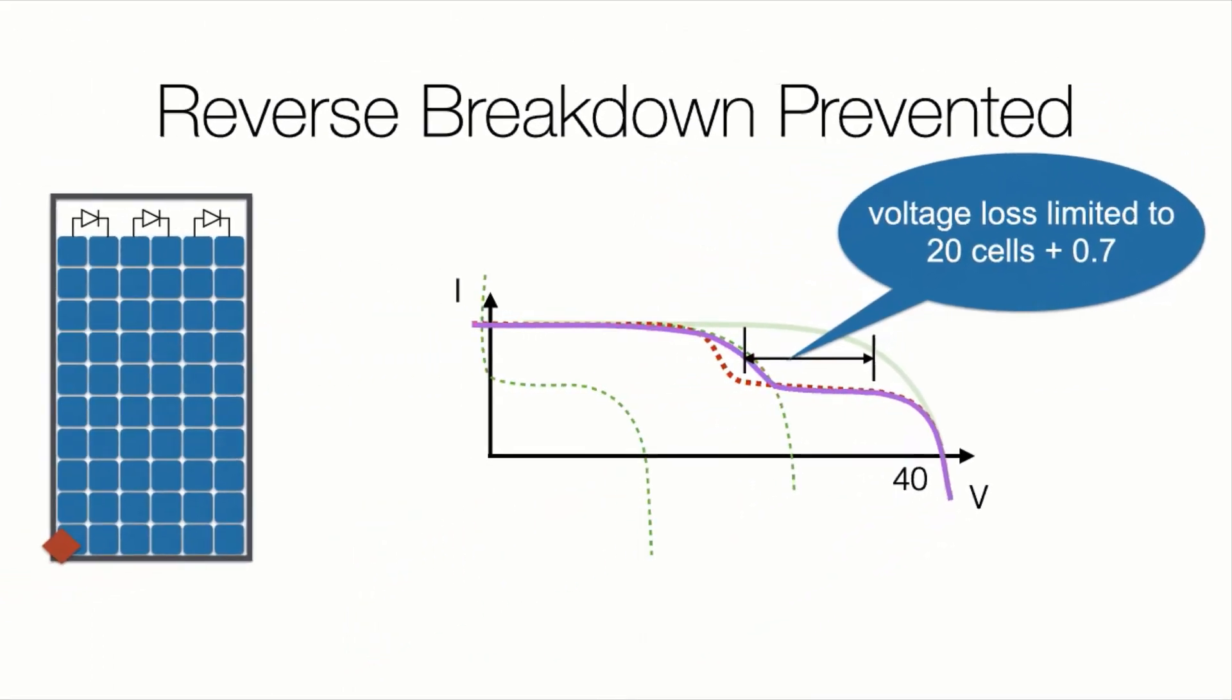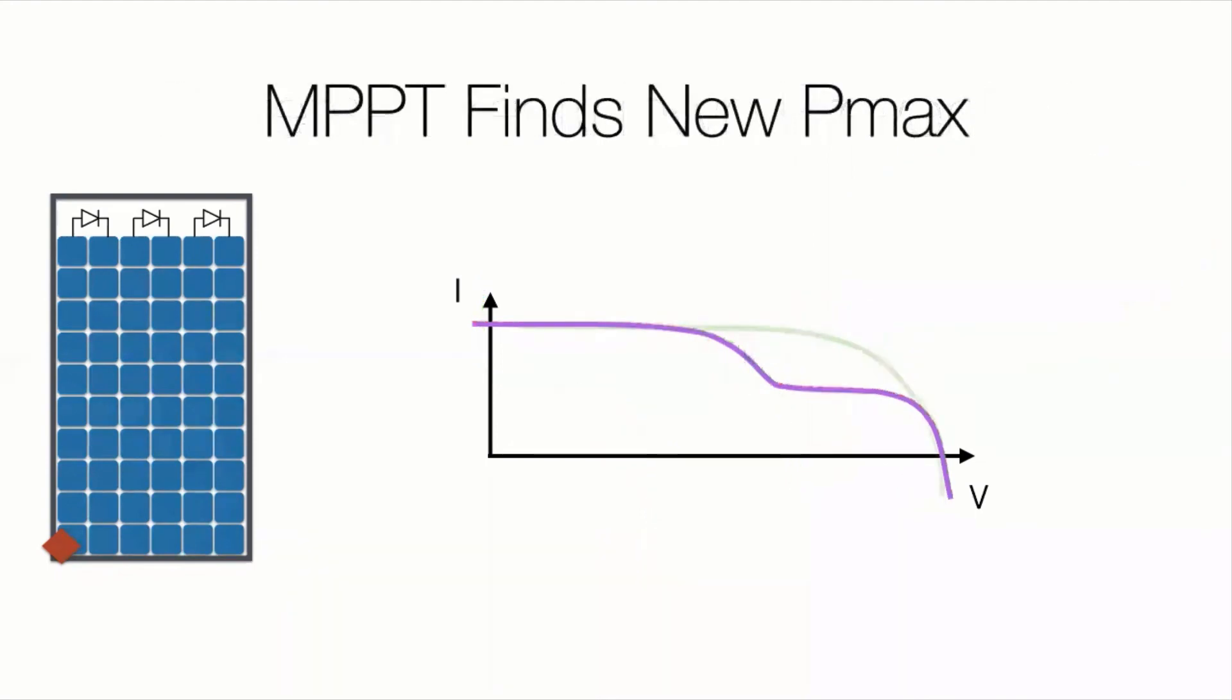So now, when you connect it to an inverter, it looks at max power operation points. And where it would have normally operated there, now it operates here. And it can operate at this high current level without reverse breakdown, because remember, it's being protected by the bypass diode.